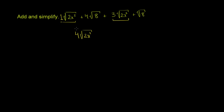If that confuses you a little bit, imagine this whole principal root of 2x squared was some variable — let's say that this whole thing was 'a', and this whole thing was 'a' as well, because it's the same thing. Then you'd have 1a plus 3a's, which gives you 4a's. In this case, a is all of this business right over here. So we added those terms.